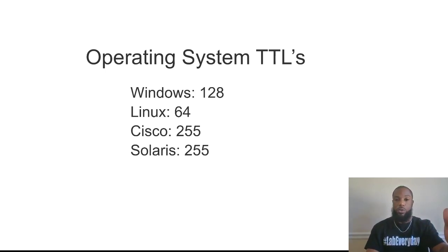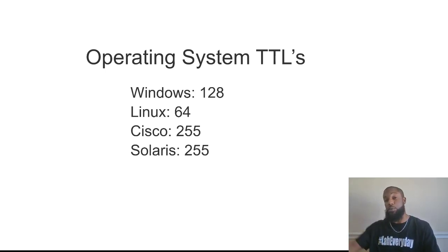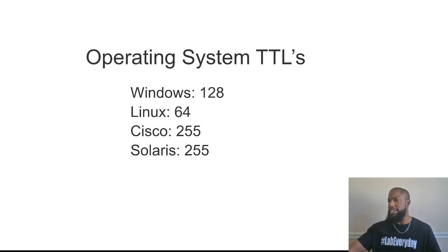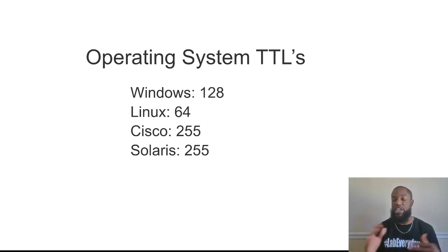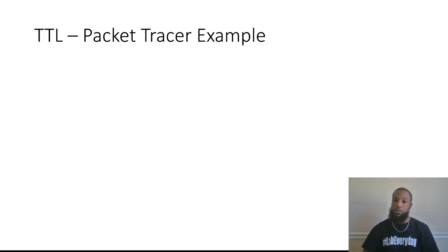Depending on what host you're pinging, the Time to Live gets decremented by one, but it depends on what you're trying to reach. Windows' Time to Live is 128. So if you're pinging a Windows host, you're counting down from 128. It gets kind of confusing because if you're on a Cisco device pinging a Windows host and you see a TTL of 54, and you know you didn't go 150-plus hops, then you know there was a change in operating system.